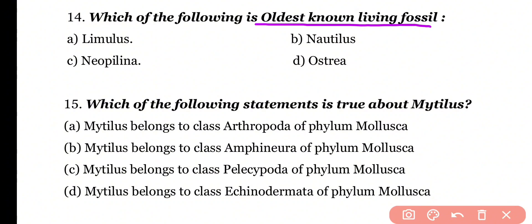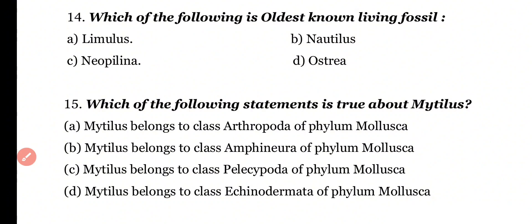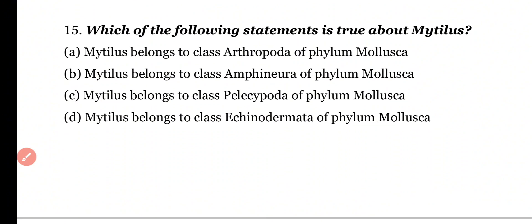Question number 14: Which of the following is the oldest non-living fossil? Options: Limbless, Nautilus, Neopilina, Ostrea. Correct answer is option C. Neopilina is known as the world's oldest living fossil and belongs to class Monoplacophora.